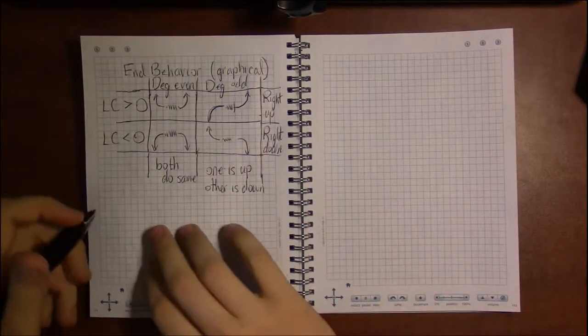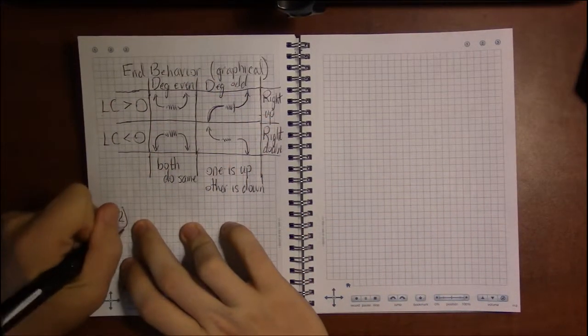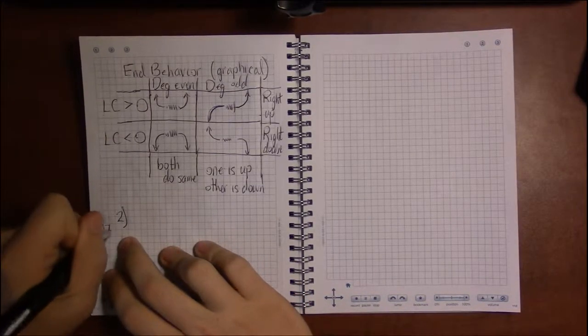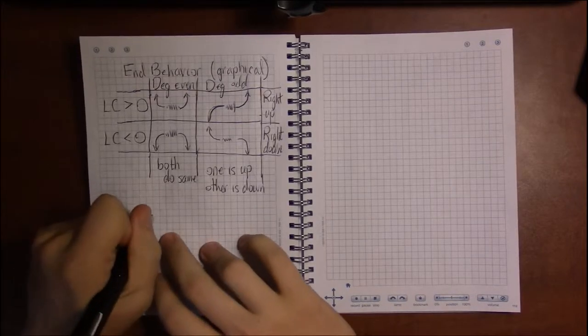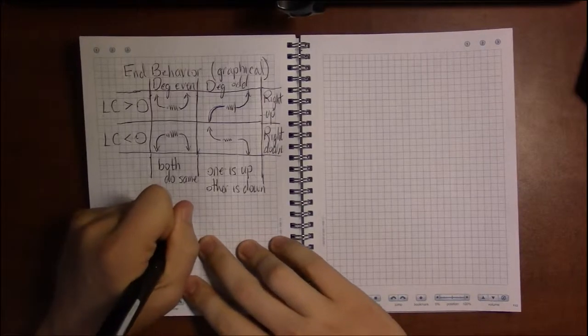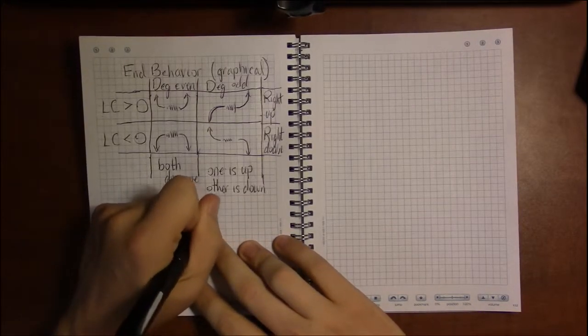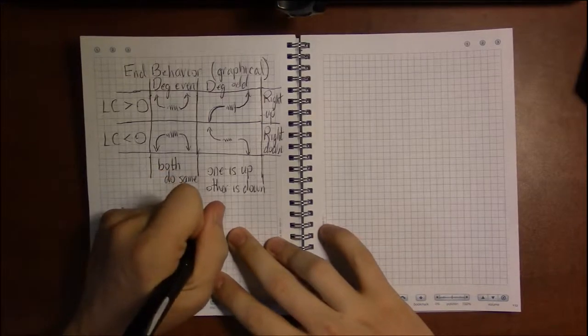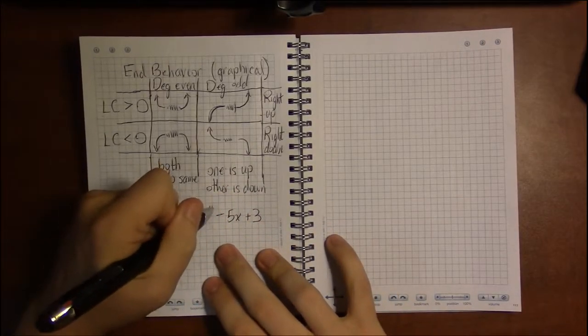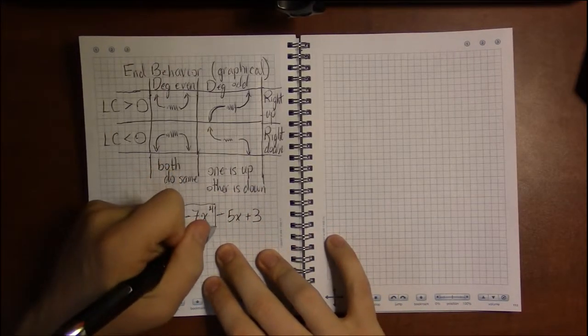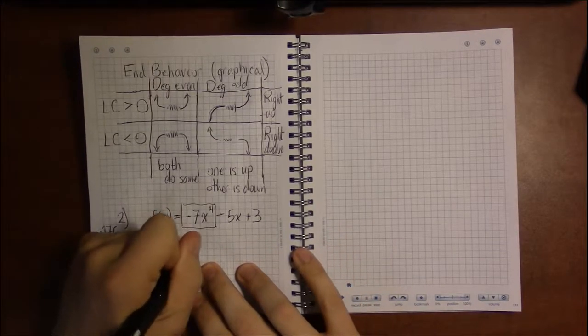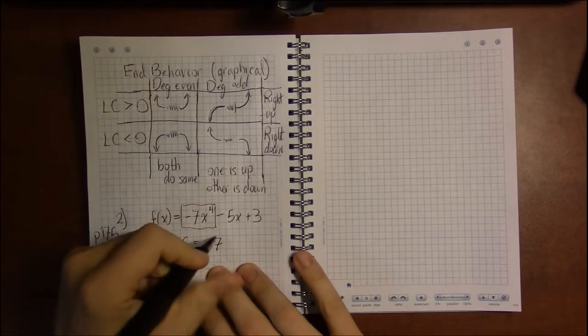So if we go back to our example from problem 2, which is on page 175, if I rewrite this in standard form, we have -7x⁴ - 5x + 3. We said that the x⁴ was our leading term.